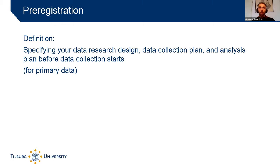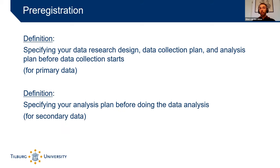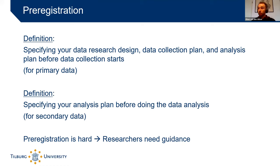So how do we define pre-registration? For primary data, it means specifying your research design, data collection plan, and analysis plan before data collection starts. For secondary data, it's simpler: specifying your analysis plan before doing the data analysis. And one thing to note is that it's really hard — that's why we need to provide researchers with guidance. That's what we try to do with this template. Marjan will now go into the process of developing it.